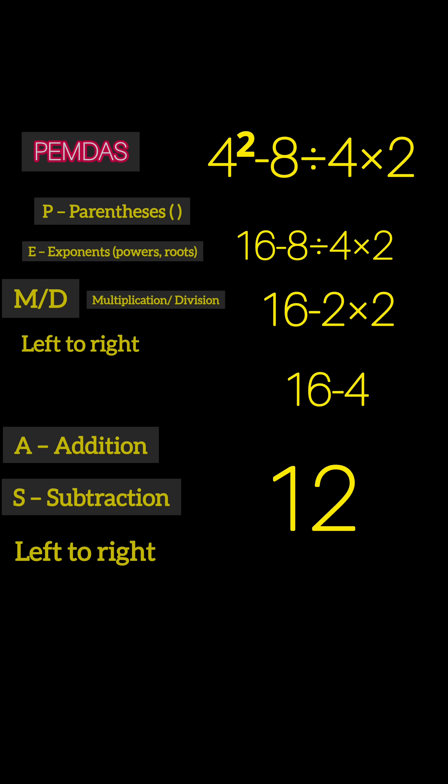Multiplication and division are equals. Addition and subtraction are equals. And when equals show up side by side, always go from left to right.